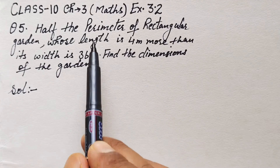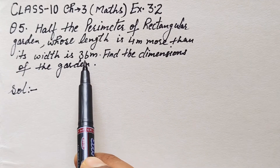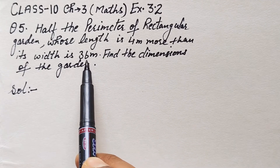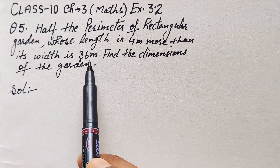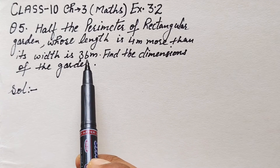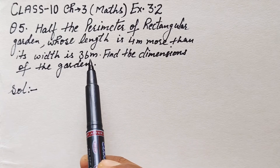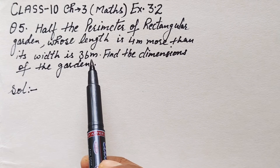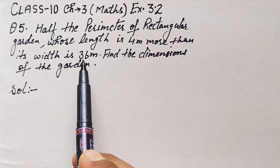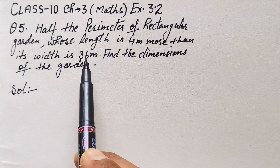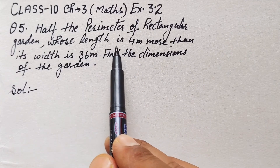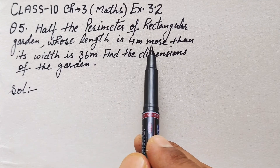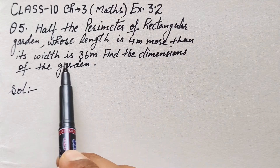Half of the perimeter is given as 36 meters. So if half of the perimeter is 36, then the complete perimeter will be double of 36, that is 72 meters.